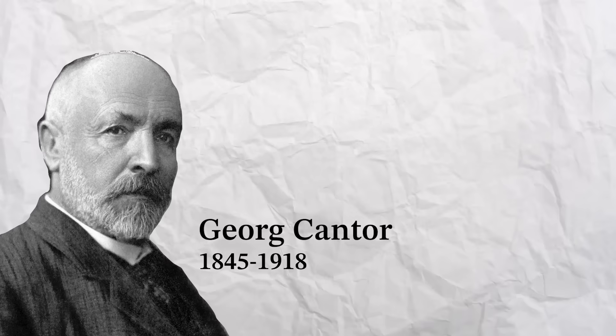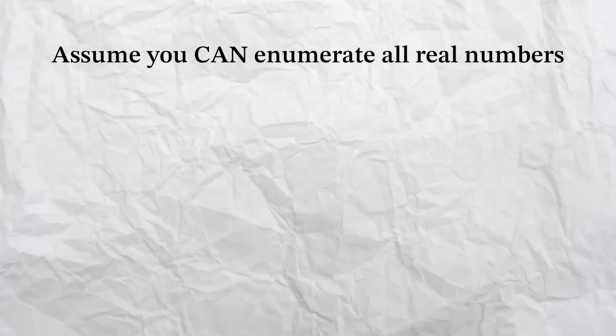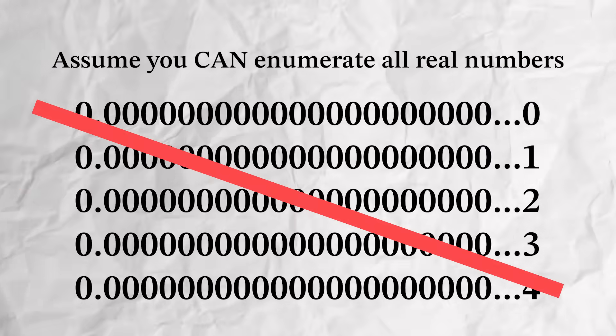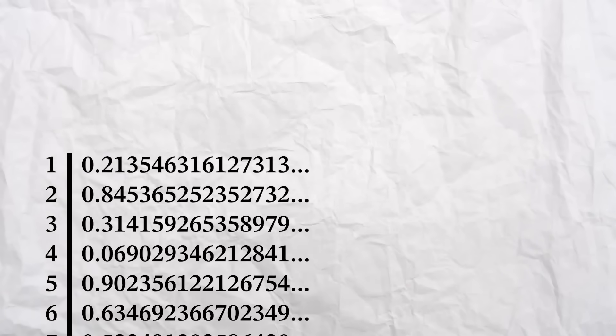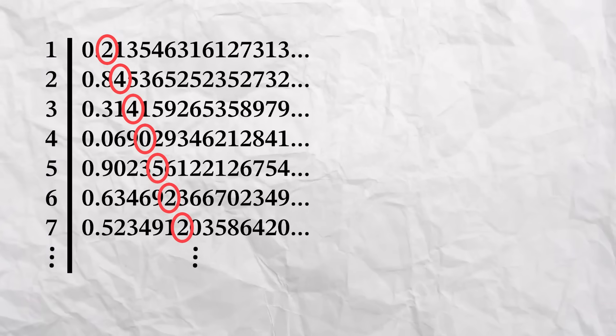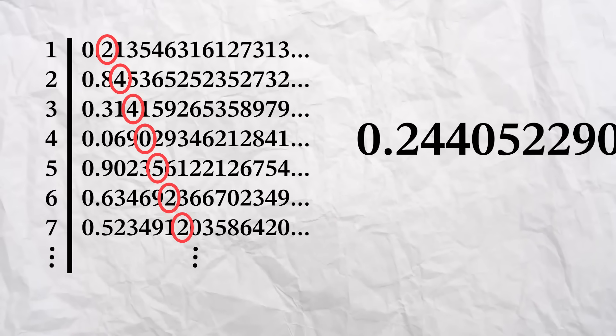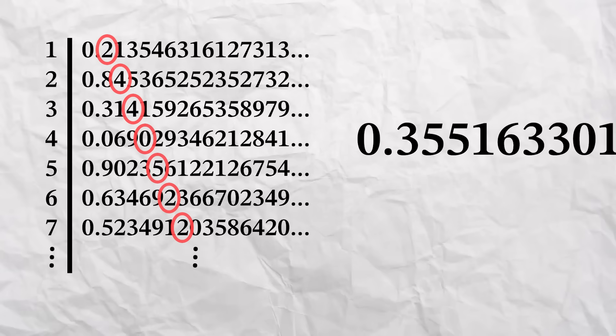And that leads us into a proof. In 1891, Georg Cantor published his famous diagonal argument, which starts with the assumption that you can number all of the real numbers. Since there's no way to go from one to the next, we can just randomly list them out. But is this list complete? Well, let's consider the nth digit of each nth number. For example, the first digit of the first number, second of the second, and so on.